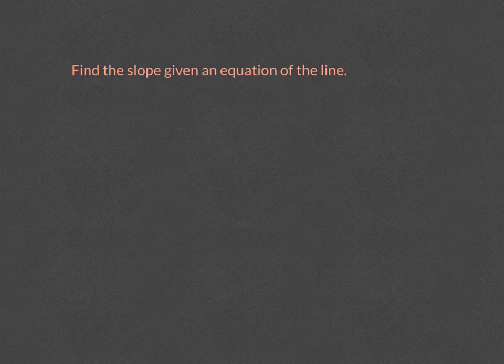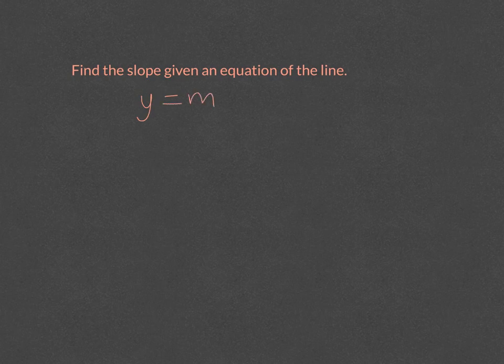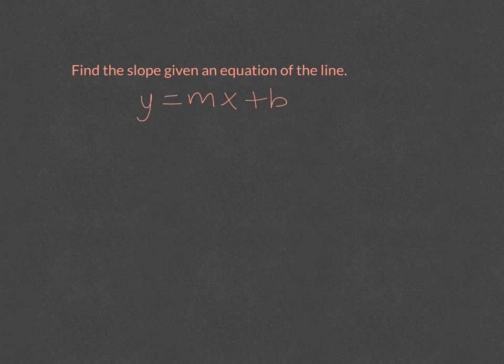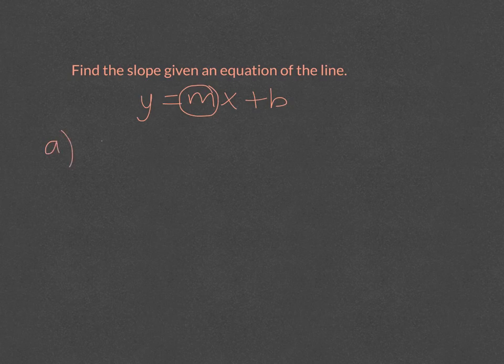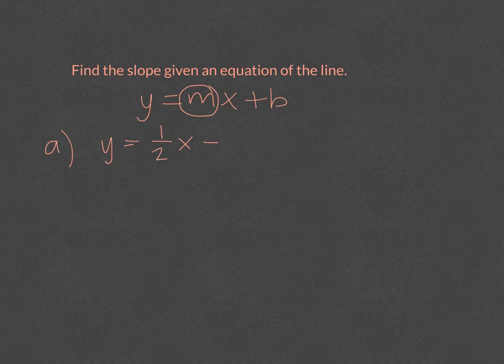To find the slope of the equation of the line, let's say that it is in the form y equals mx plus b. The slope is very simple. As long as the y is solved for, the slope is the value that is on the x.